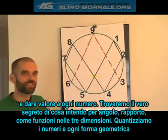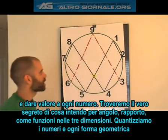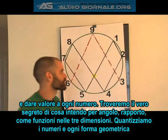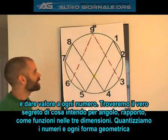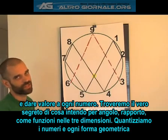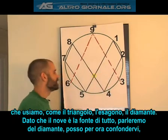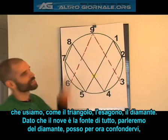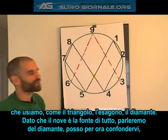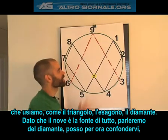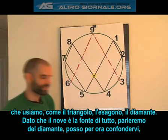We want to find the true secret of what I meant when I was talking about angle and ratio — how that works in three dimensions. We can quantize numbers in any of our geometric shapes we're working with, whether it's the triangle, the hexagon, or the diamond. The 9 is the source of everything, so we're going to start by talking about the diamond — by quantizing numbers in diamonds.